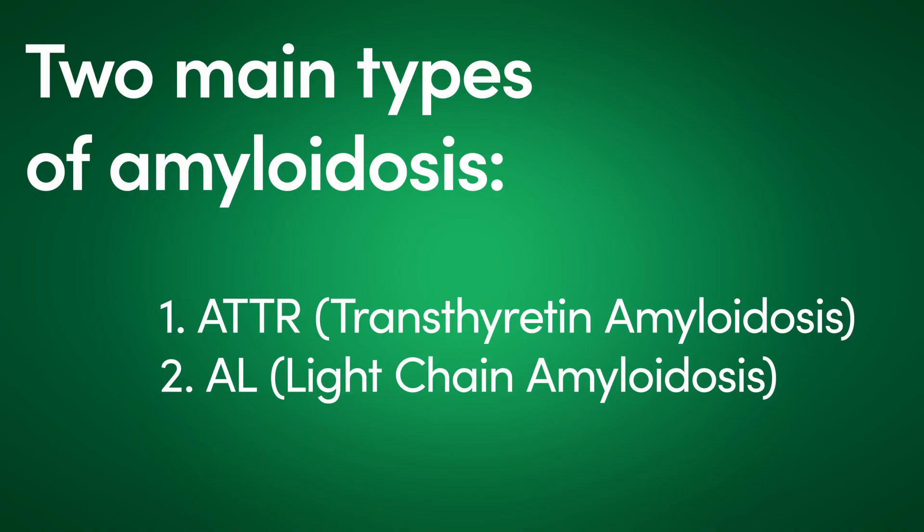The other kind of protein is called light chain protein. Based upon the abbreviations we use, we either call it ATTR amyloid — that's the TTR protein — or amyloid light chain, AL amyloid. The prevalence of AL amyloid is fortunately not that high: it's one for every 100,000 Americans, so roughly about 5,000 patients a year are diagnosed with AL amyloidosis.